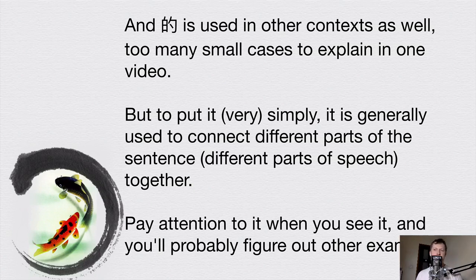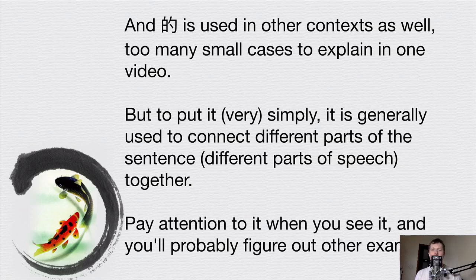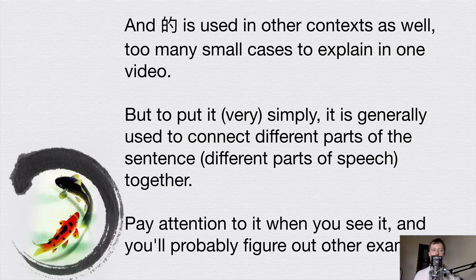There are other contexts for 的 as well — too many small examples to cover in one video — but I've explained the main ways all three of these characters are used. To put it simply, this 的 character is generally used to connect different parts of a sentence together and show their relationship, indicating which part is subordinate. The most important part of the sentence usually comes after 的, and what comes before 的 is usually modifying or describing that main part.